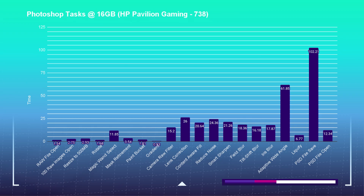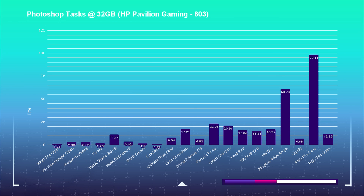For the Photoshop tasks, as you can see, 16 gigs of RAM versus 32 gigs of RAM shows that the timing for each task drops by about 25 to 30 percent with 16 versus 32 gigs. We have a 738 score with the HP Pavilion gaming laptop, and once we upgrade to 32 gigs of RAM, we see that score jump up to 803 — about a 10 to 15 percent increase in performance based on the timings and overall score.